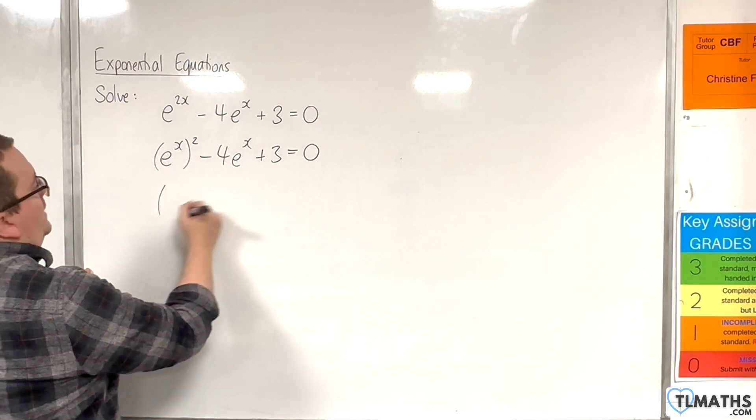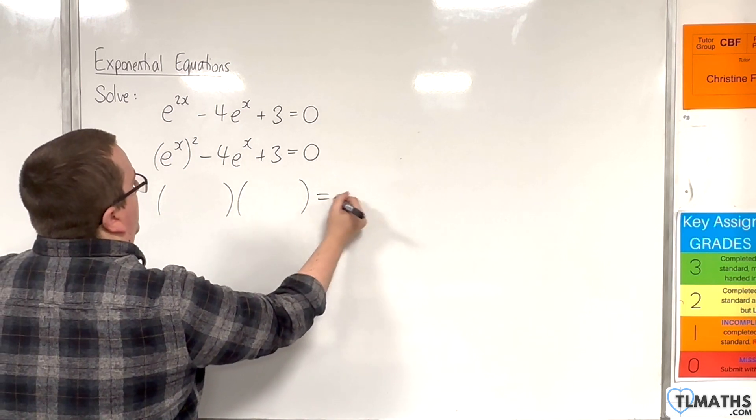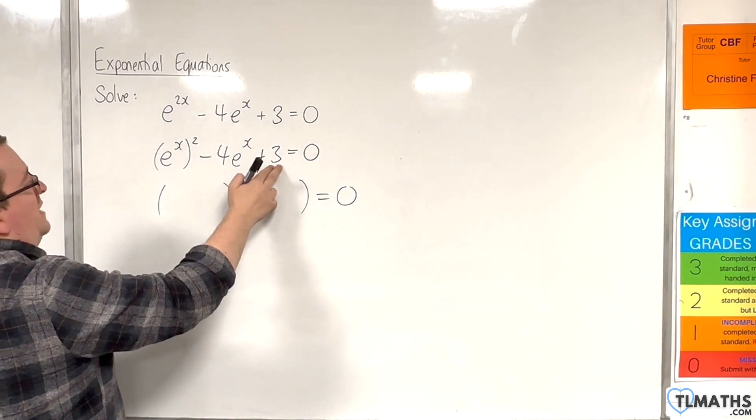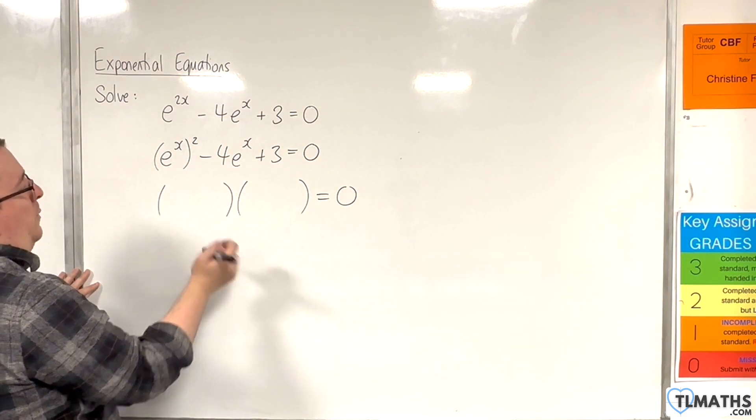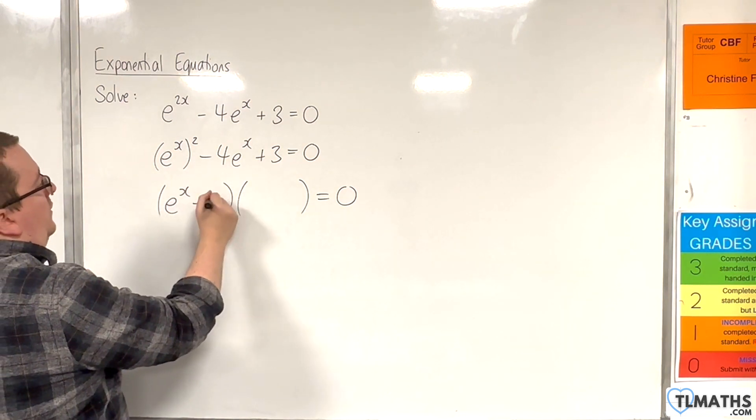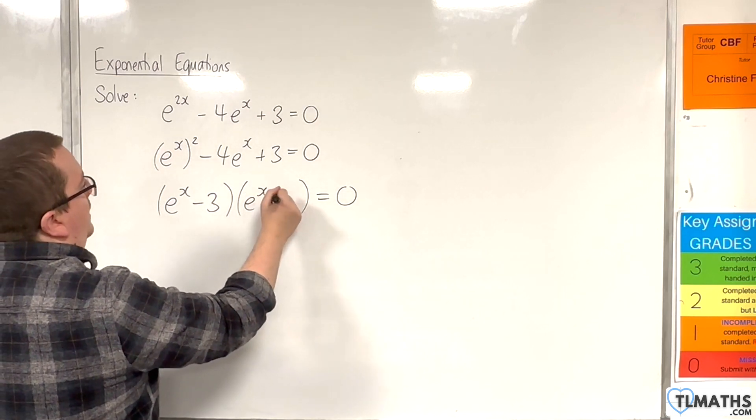So this can be factorised because we're looking for two numbers that multiply together and make 3 but add together and make minus 4. And that's minus 3 and minus 1. So e to the x take away 3, e to the x take away 1.